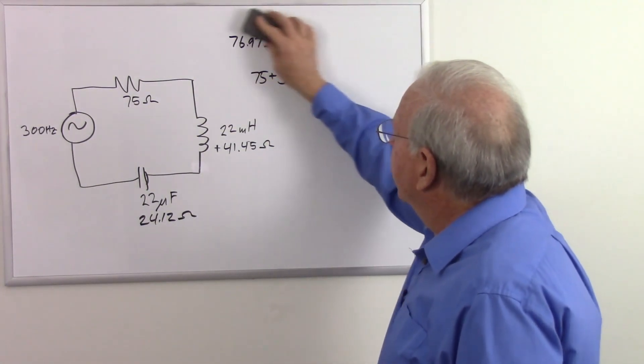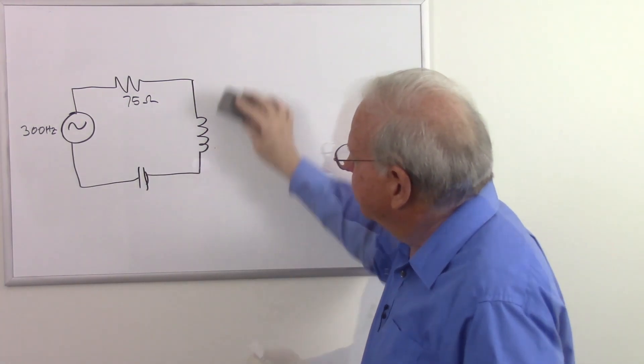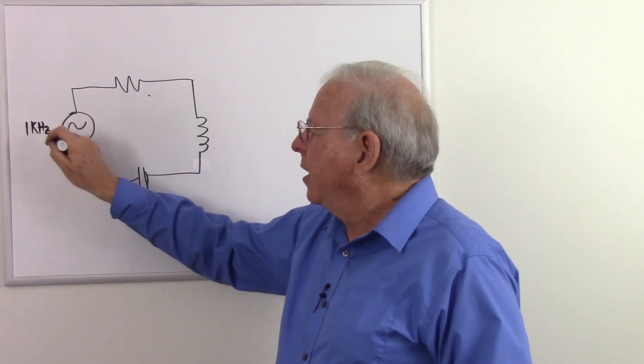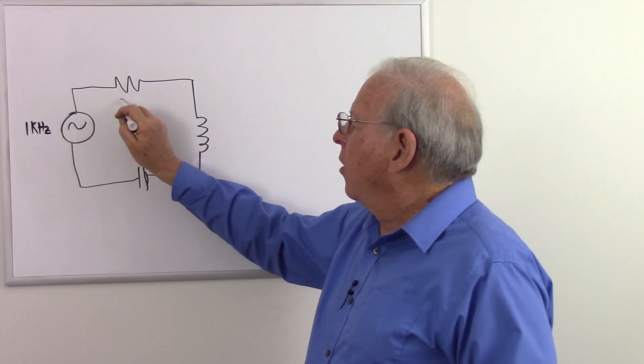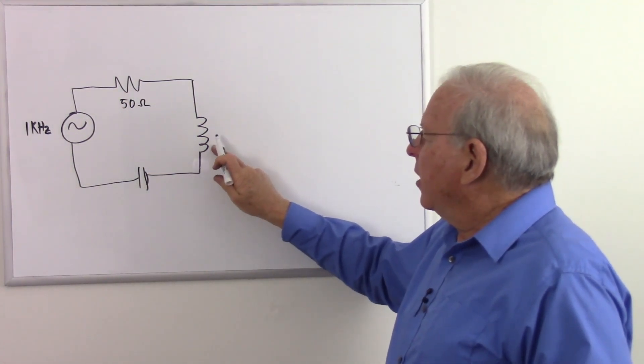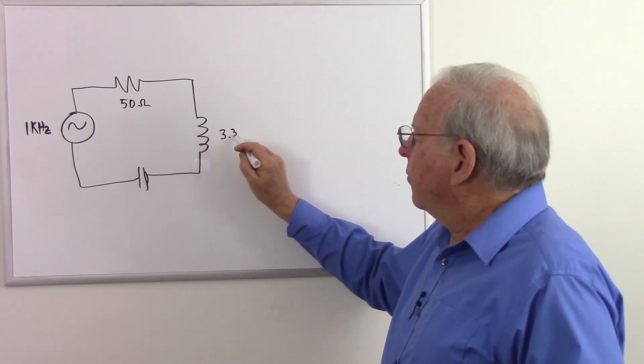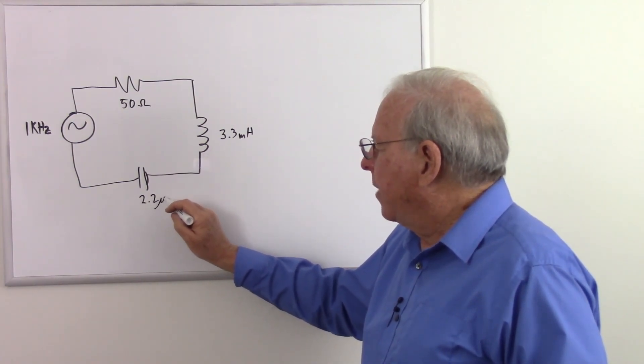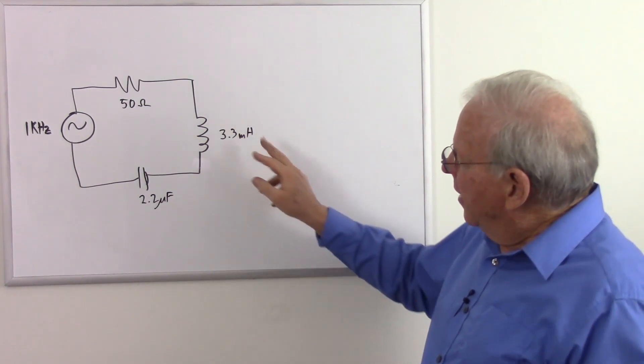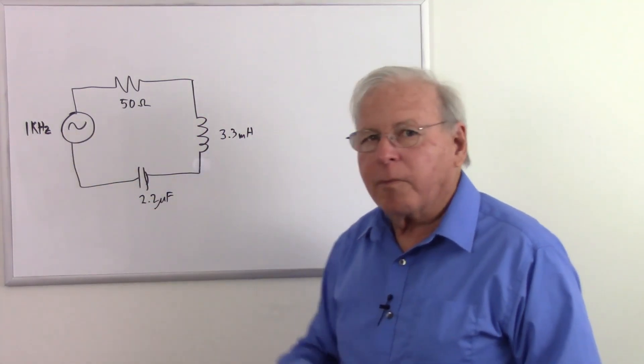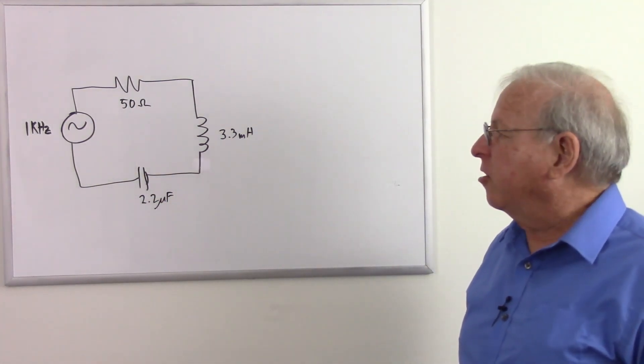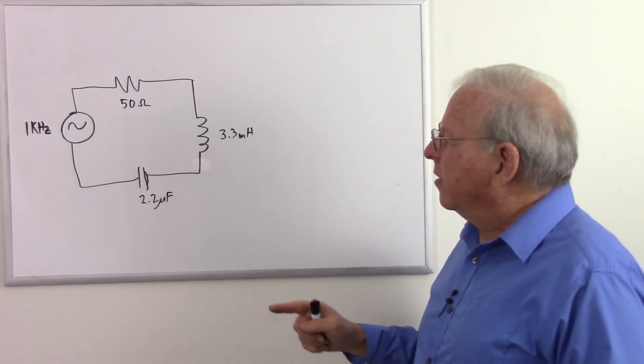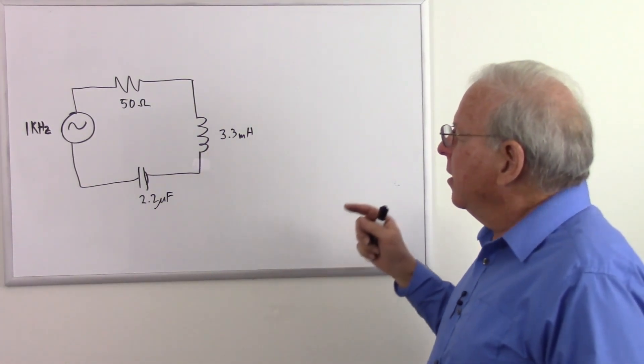So let's get on with it by going to another problem. I'm going to put all new values here. Let's start out with a bigger number, how about 1 kilohertz? Let's make this 50 ohms, and let's make our inductance 3.3 millihenries, and our capacitor 2.2 microfarads. These aren't too far different from the other ones, but we've put some real high frequency here. We're working with a kilohertz instead of in the hundreds of hertz. Let's go on with the problem.